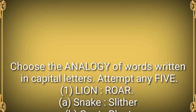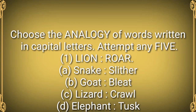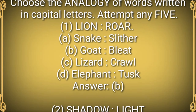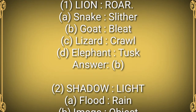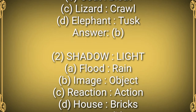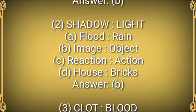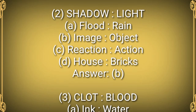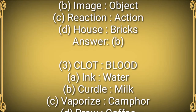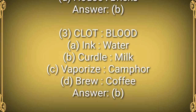Question 1: LION : ROAR. Options: A) Snake : Slither, B) Goat : Bleat, C) Lizard : Crawl, D) Elephant : Tusk. Answer: B. Question 2: SHADOW : LIGHT. Options: A) Flood : Rain, B) Image : Object, C) Reaction : Action, D) House : Bricks. Answer: B.